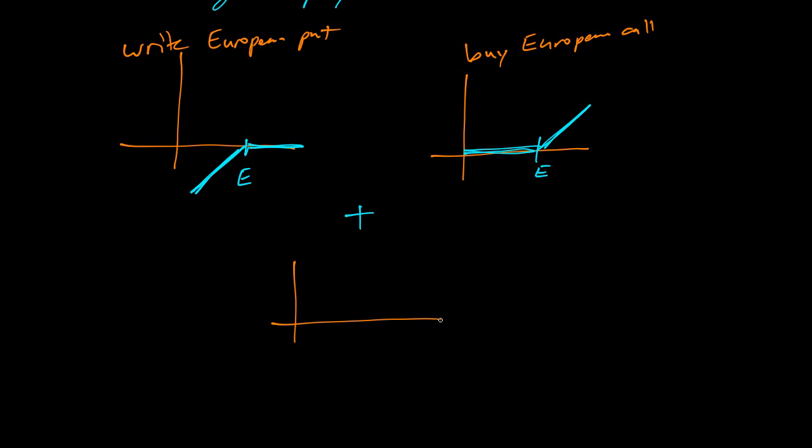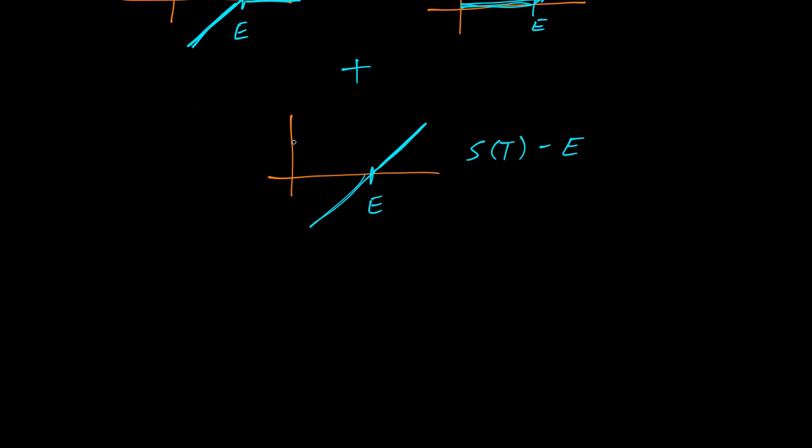They cross over right at E. The zero adds here, and you get down here. You actually get just S of T minus E. This is the sum of the two graphs.